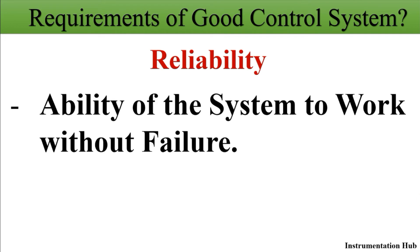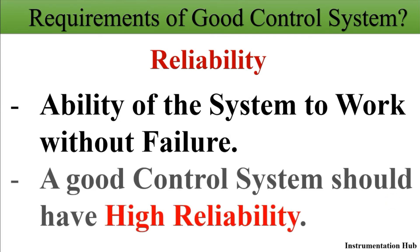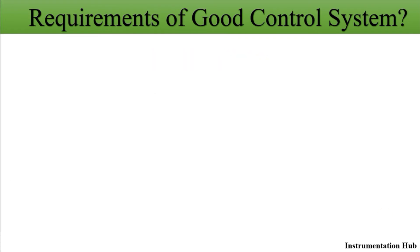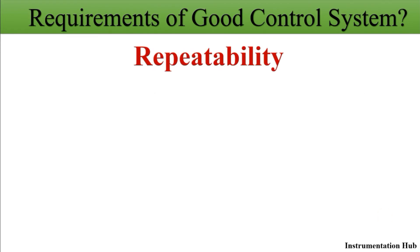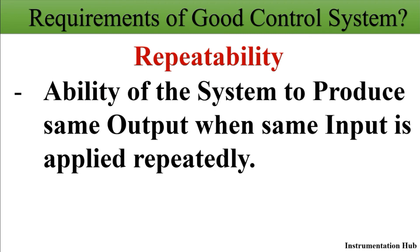The next parameter is reliability. Reliability is the ability of the system to work without failure. If the control system is working without any failure, then only you can say that it is a good control system. So a good control system must have high reliability.